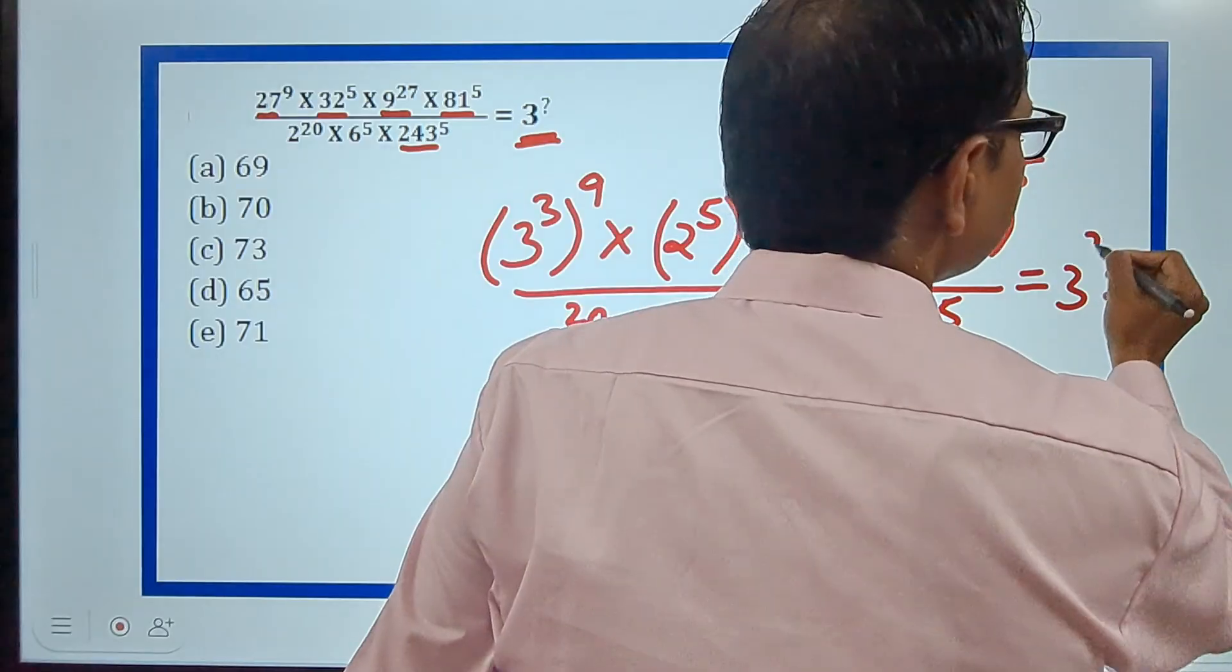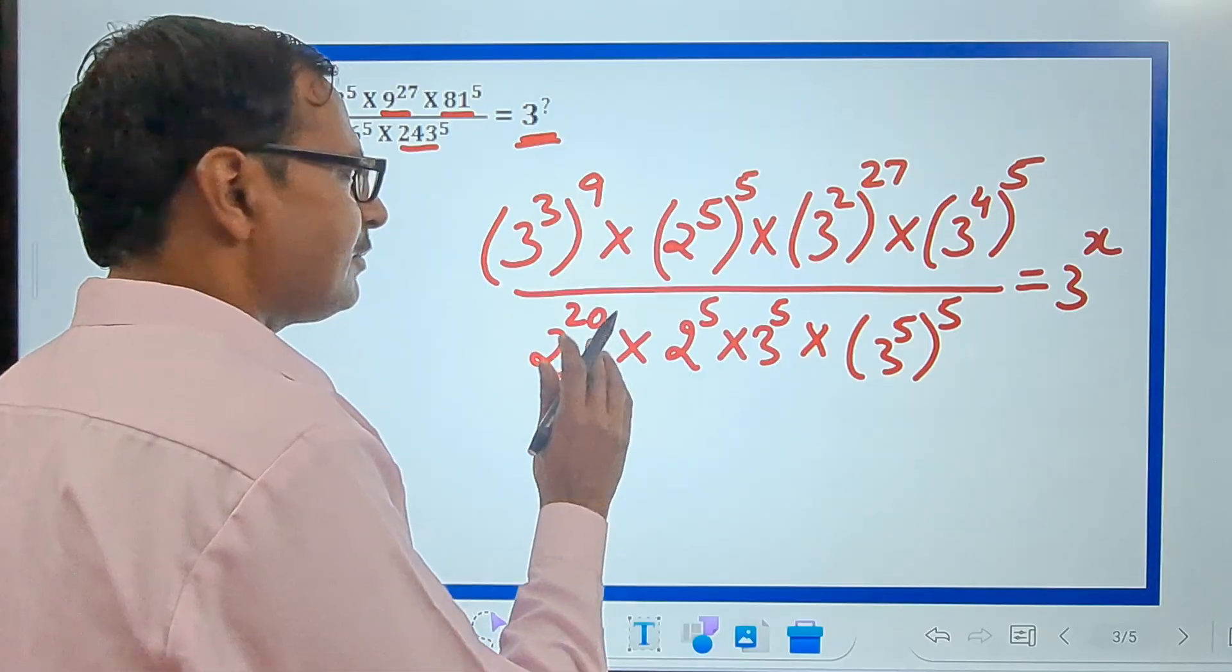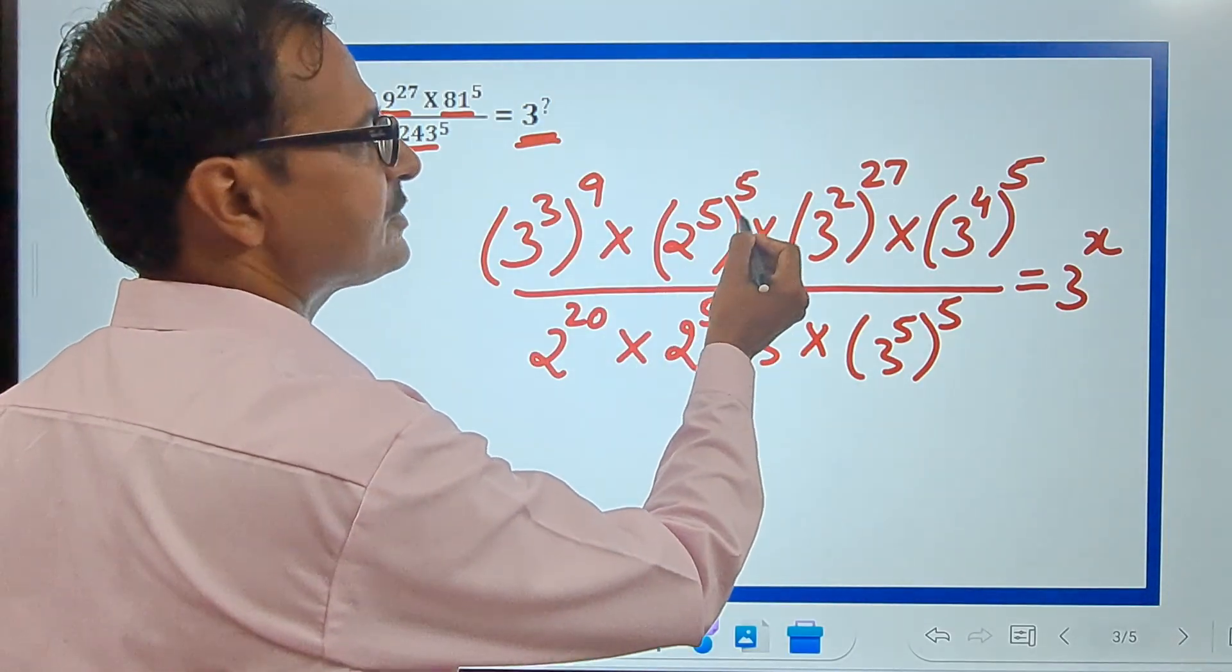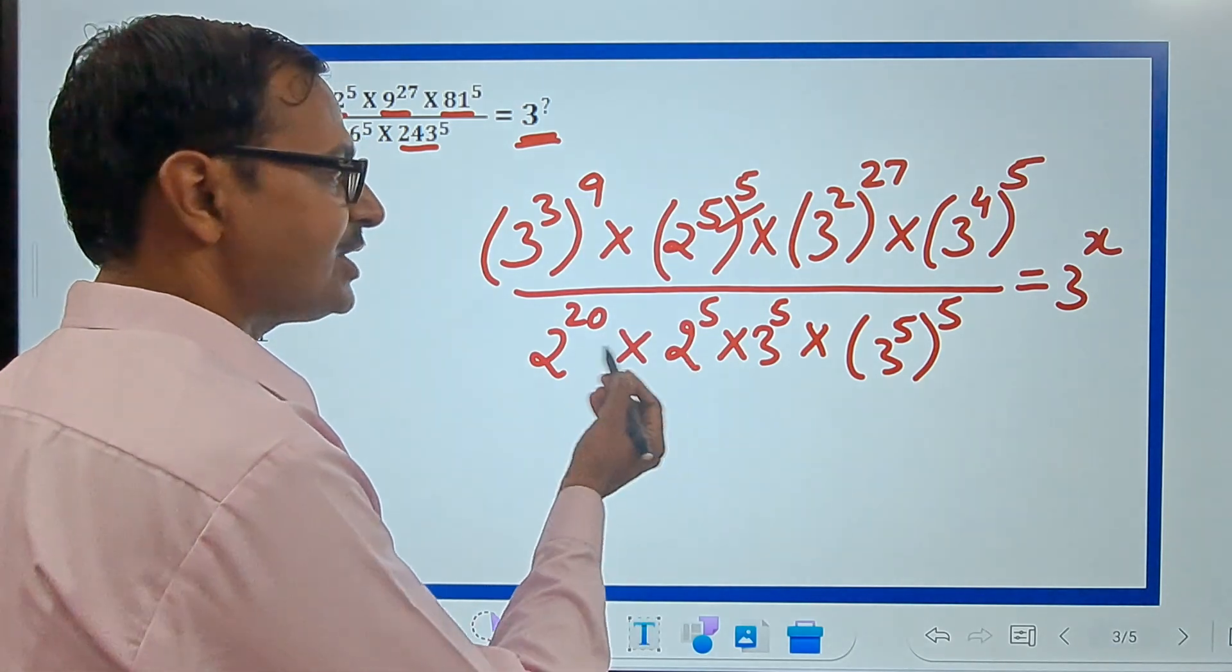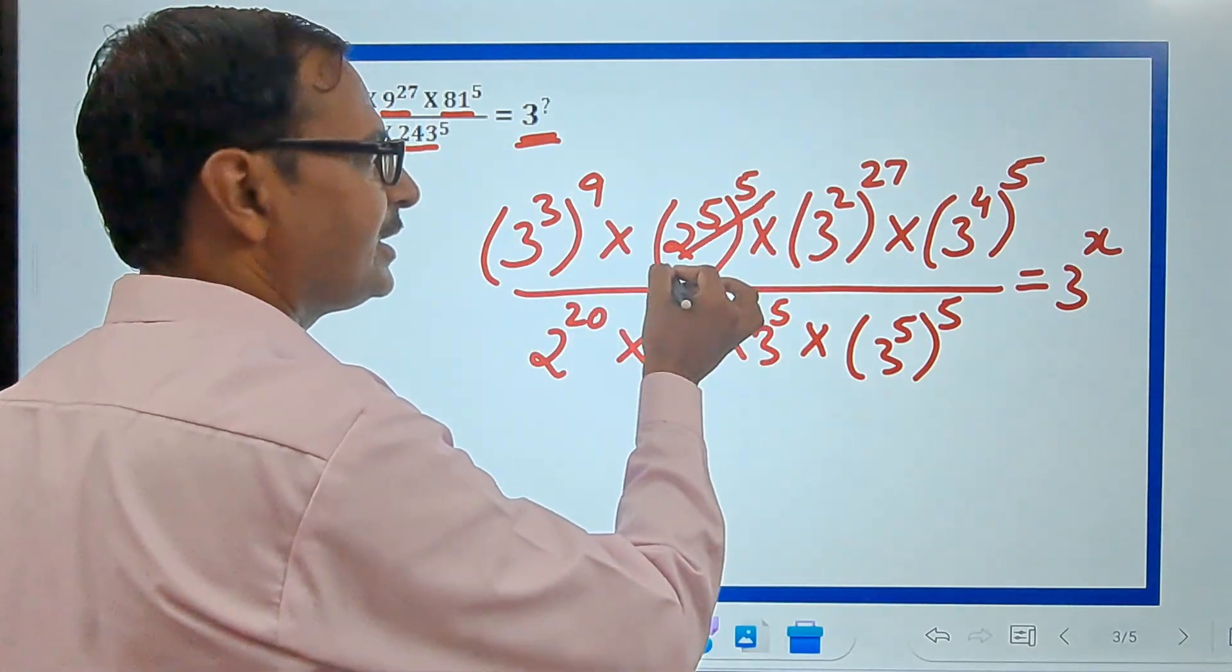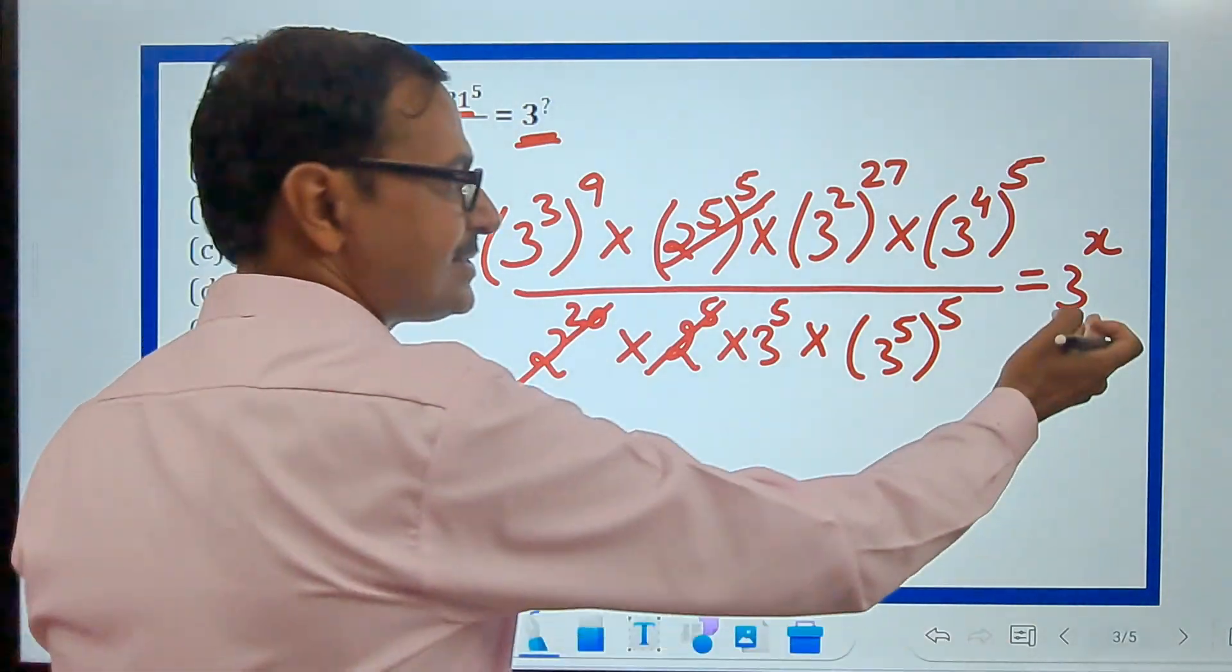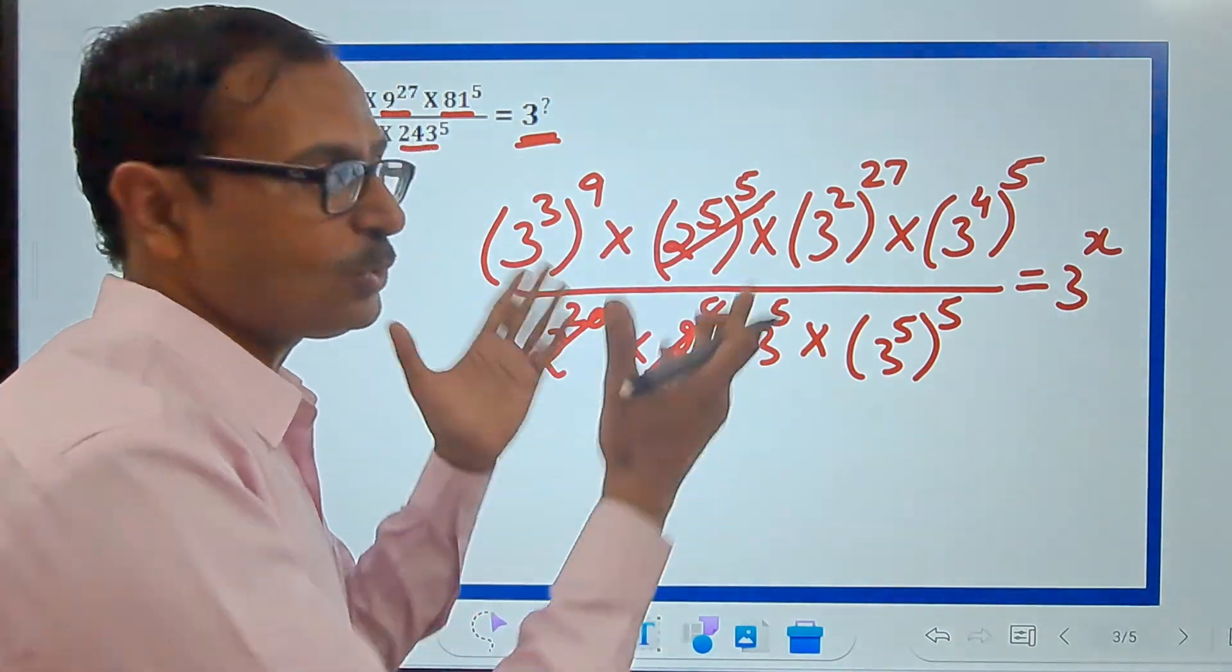Equals 3 raised to power something. Let's first take the terms which don't have base 3. Here you have 2 raised to power 25, here you have 2 raised to power 20 and 2 raised to power 5, which multiply to give 2 raised to power 25. This factor is getting cancelled by these two factors, and that was bound to happen because 3 is the base here. You can't have any term containing any other base except 3, otherwise you can't find x.